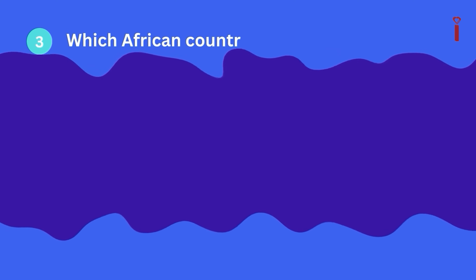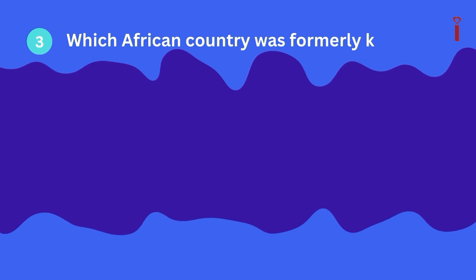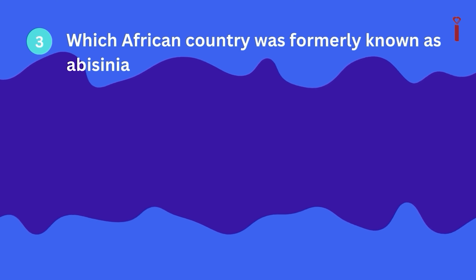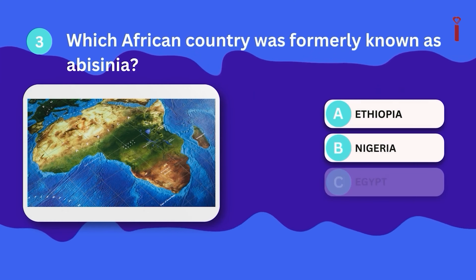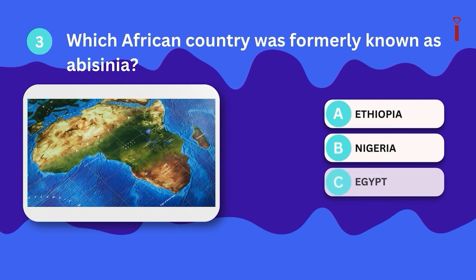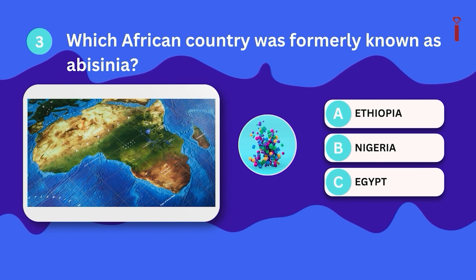Question 3: Which African country was formerly known as Abyssinia? A. Ethiopia, B. Nigeria, C. Egypt?